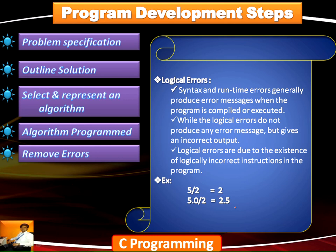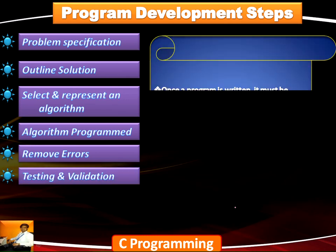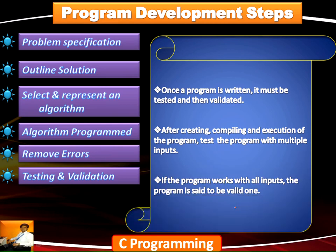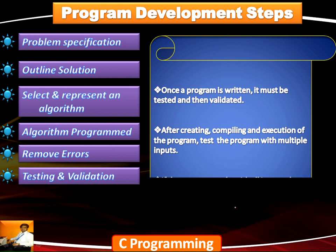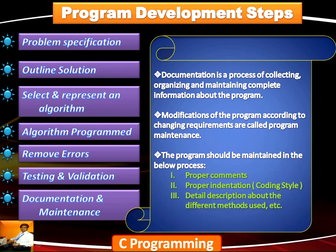Once we have successfully removed all the errors or bugs in the program, we need to test and validate the program. After creating, compiling, and executing the program, test it with multiple inputs. If the program works with all the inputs, then the program is considered valid. Once done with the testing and validation process, we move to the final phase: documentation and maintenance.